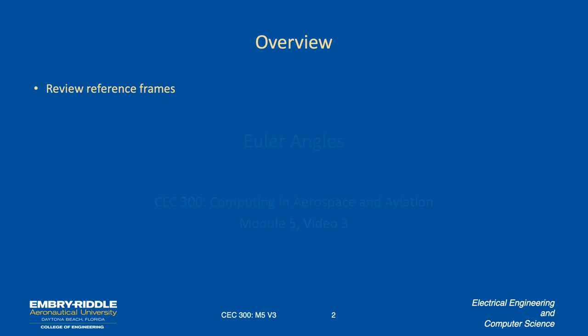In this video, we're going to explore Euler angles. First, we're going to review reference frames. We're also going to review rotation of axes. Then we'll talk about going from the northeast down reference frame to the body reference frame, and back from the body reference frame to the northeast down reference frame.